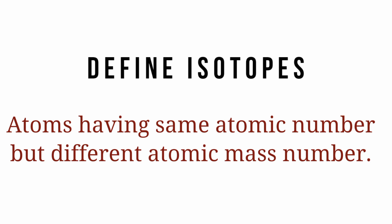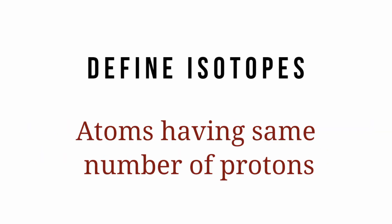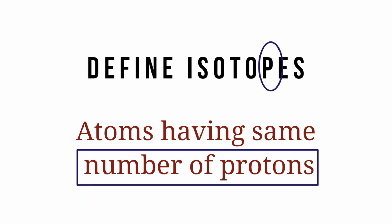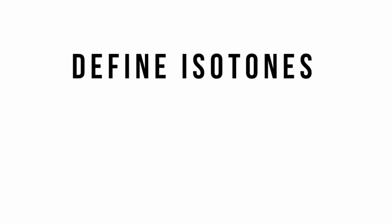Define isotopes. These are atoms having the same atomic number but different mass numbers, or atoms having the same number of protons. You can remember this by the 'p' in isotopes, which represents the same number of protons.